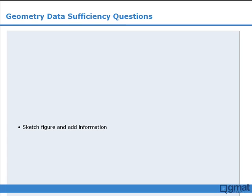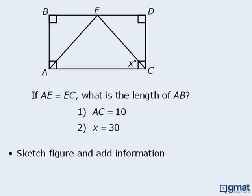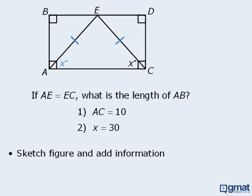The next tip is: sketch the figure and add information to the diagram. Since the geometric figure will appear on a computer screen, it's a good idea to sketch the figure on your scrap paper, which will allow you to add any extra information you deduce about the figure. In this example, we are told that sides AE and EC are equal, so once we sketch the figure on our scrap paper, we can add notation to show that these two sides have equal length. Since these two lengths are equal, we can deduce that this is an isosceles triangle, which means the two base angles are equal. The target question asks us to determine the length of side AB. We are now ready for statement 1, which tells us that side AC has length 10, so we'll add this to our diagram.